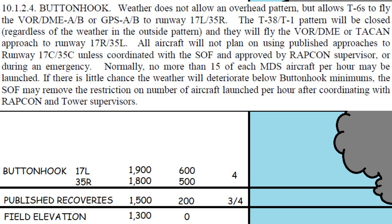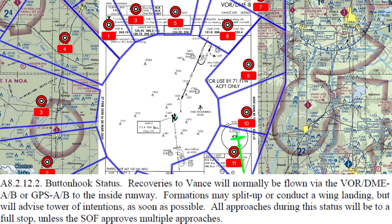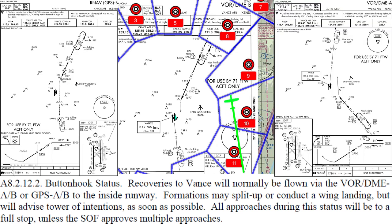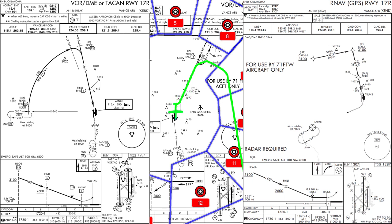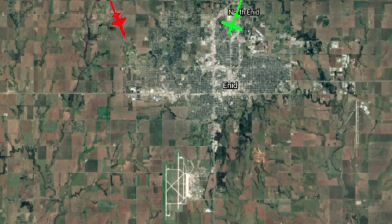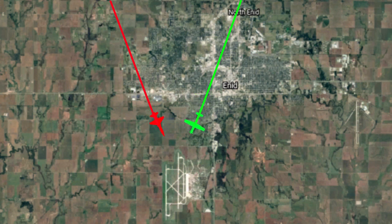When the weather does not allow the overhead pattern but is at least 504 on a 3-5 right day or 604 on a 1-7 left day, the status will be button hook and an alternate airport will be designated. Button hook means T-6s will fly the VOR or GPS Alpha or Bravo approach, pilot's discretion for the approach type, and T-1s and T-38s will fly the VOR, TACAN, or GPS approach to the outside runway. Aircraft funnel back to Vance utilizing the outside runways and normally terminate the approach to a full stop unless the SOF approves multiple approaches. The center runway will not be used unless coordinated with the SOF and approved by ATC.